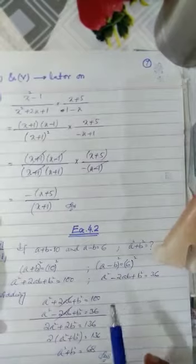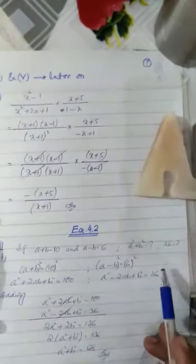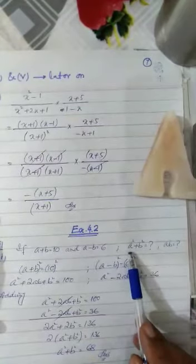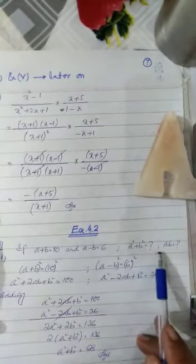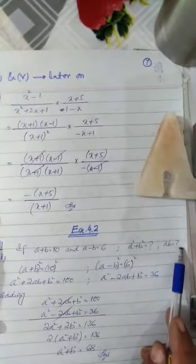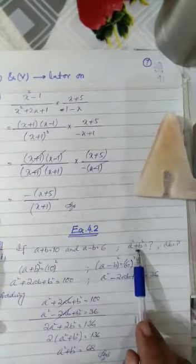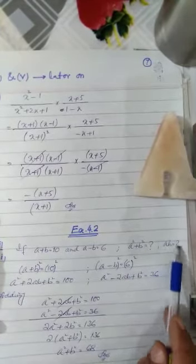So now, a² + b² value. Now children, in your question, a² + b² value we have to find, but I have written here also ab = ?, means along with this value, we will find this value as well. This is from my side.